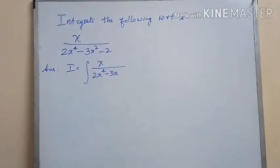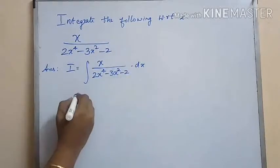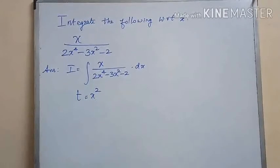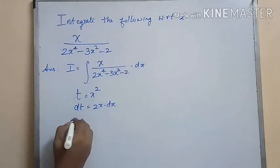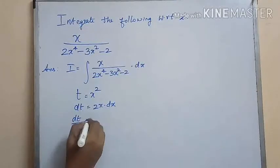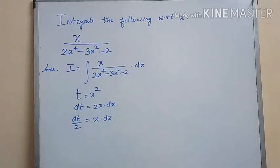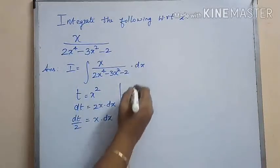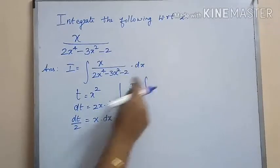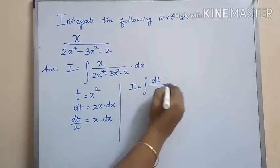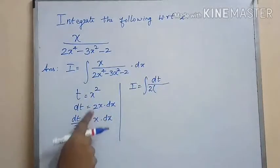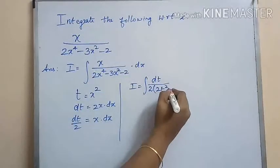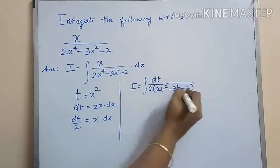Let us discuss one more problem for today's session, which is: integrate x divided by 2x to the power of 4 minus 3x squared minus 2. Let us substitute t as x squared, so dt equals 2x dx, meaning x into dx equals dt by 2. Substituting these values in I, we get the integral of dt by 2t squared minus 3t minus 2.